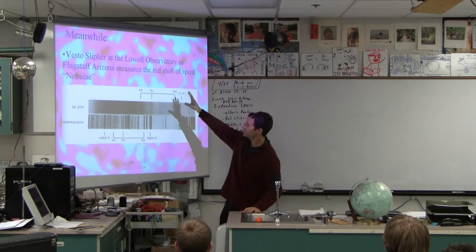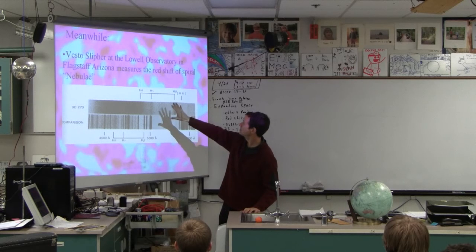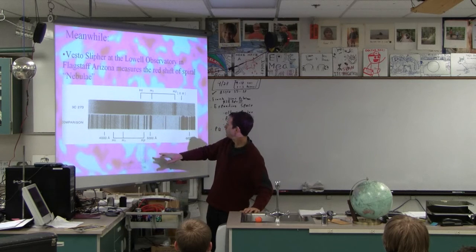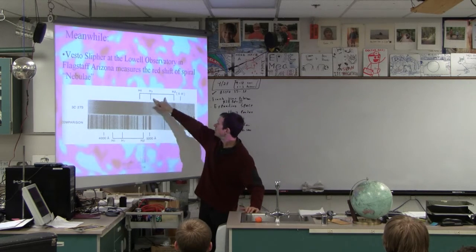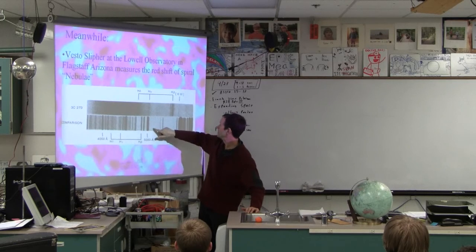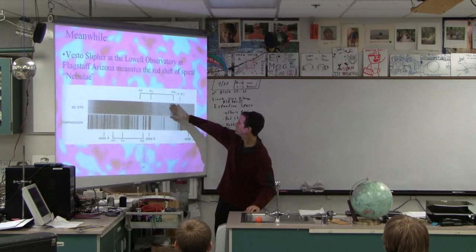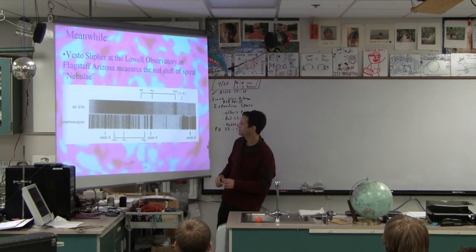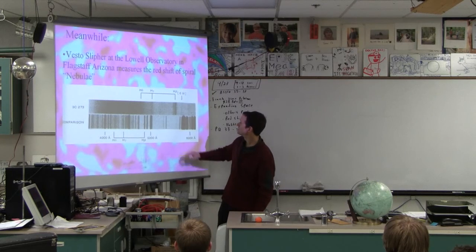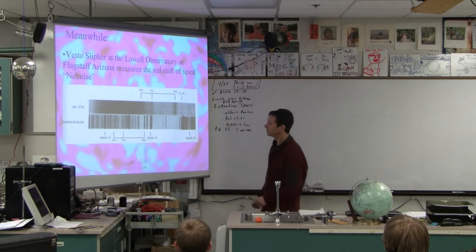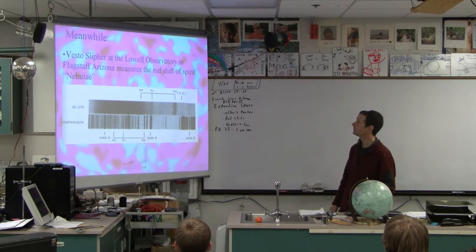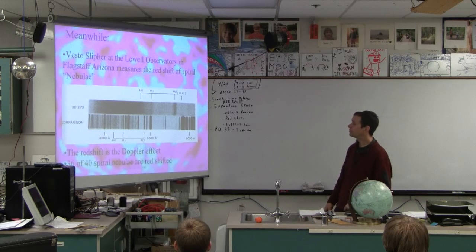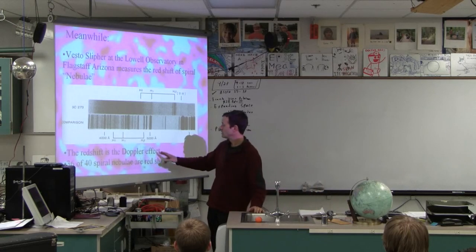So anyway, he's looking at this, we're getting ahead of ourselves, but Vesto Slipher's looking at this thing. And all of these things, they have these spectral lines. And if you look at it, this is the wavelength here. This is a longer wavelength, so this is the laboratory one, that's why this one's so nice. Here is the redshifted thing, so if you're a spectroscopist, you would look at this, and you'd say, oh, yeah, there's that line. So this thing is shifted toward the red, it's a bigger wavelength, which means it's Doppler shifted, it means it's moving away from us. The redshift is a Doppler effect. And 36 of 40 spiral nebulae that he can see are...